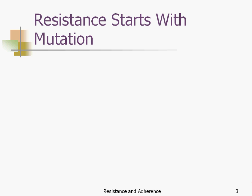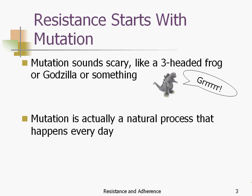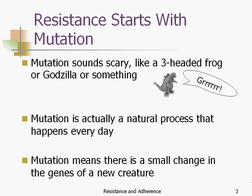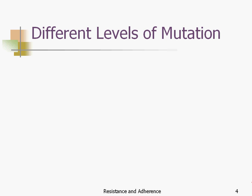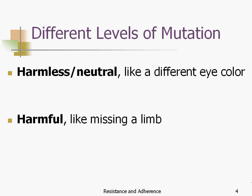Resistance — the concept of it — starts with mutation. That sounds like a three-headed frog or something, right? But mutation is actually a natural process that happens every day. It means there's a small change in the genes of a new creature that just got born. Some changes are harmless or neutral, like a different eye color — it doesn't affect how the eye functions. Some mutations are harmful; if the new creature is missing a limb, it won't function as easily.